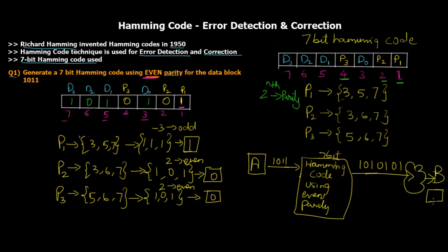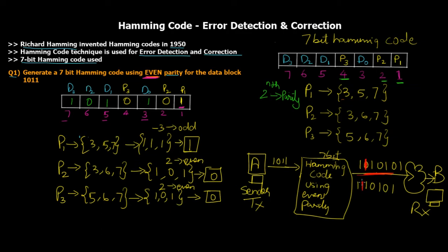A is the sender (TX) and B is the receiver (RX). Part one is done — we calculated the Hamming code and A sent the entire 7-bit code over the network to B. Now, what if the data gets corrupted? In transit, let's say this zero got converted to a one. The actual data transmitted was 1110101 instead of 1010101.